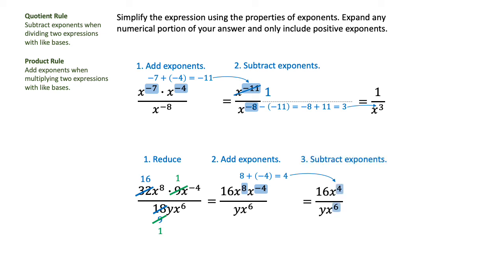Now I can subtract exponents, and I'm going to begin subtracting in the denominator this time. 6 minus 4 equals 2. I've eliminated x to the 4th in the numerator, and there's a 16 up there so I don't need another placeholder. My final answer is 16 over yx squared.